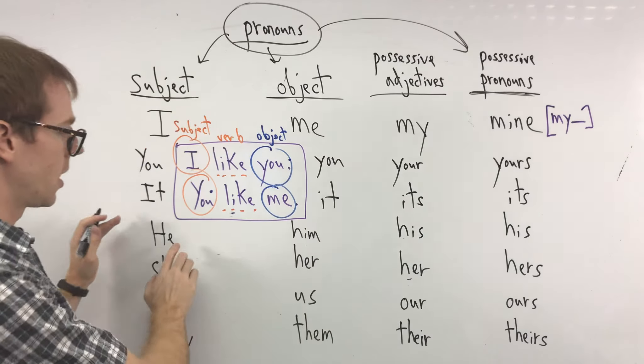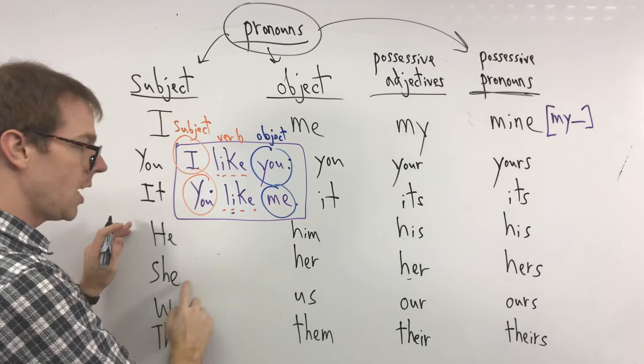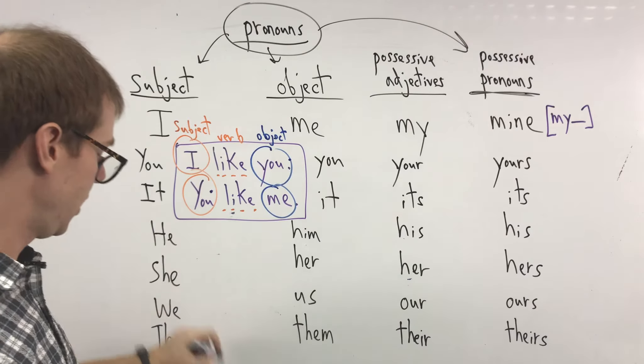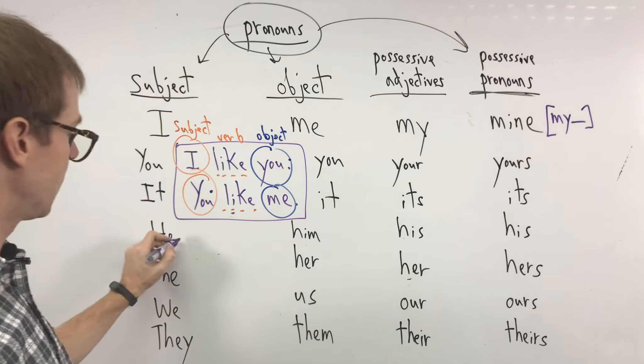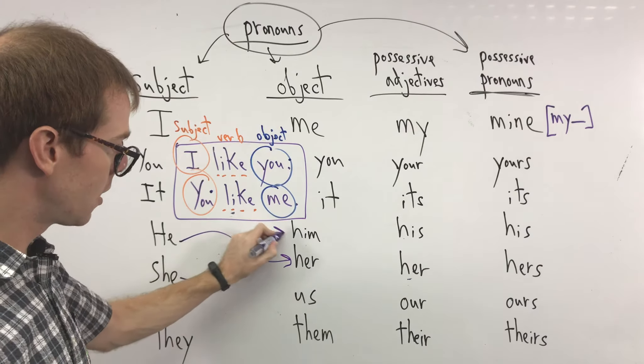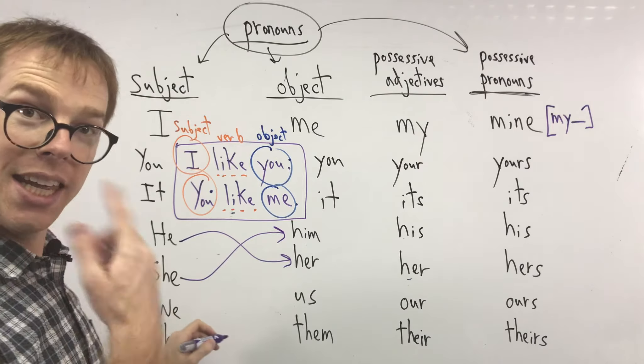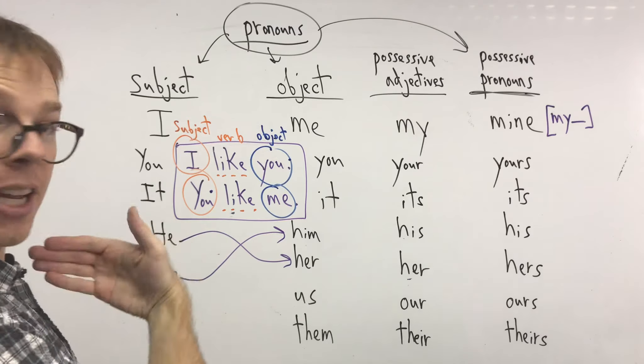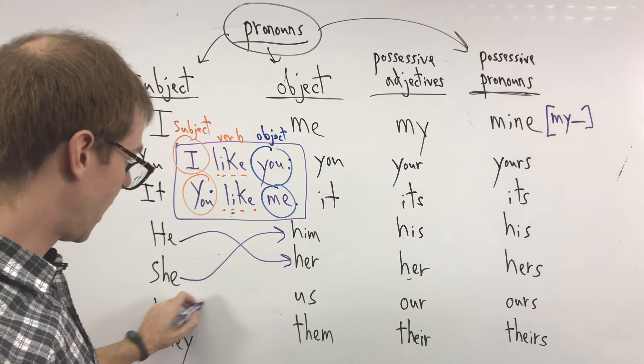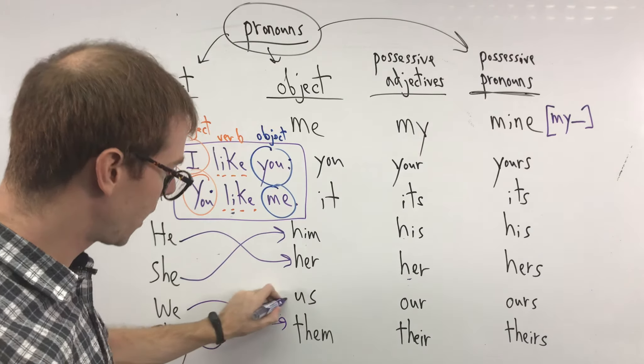But of course, the he, him, she, her. We cannot say he likes she. No, he likes her. She likes him. Maybe we, me and my friends, we like them. We like them. They like us.